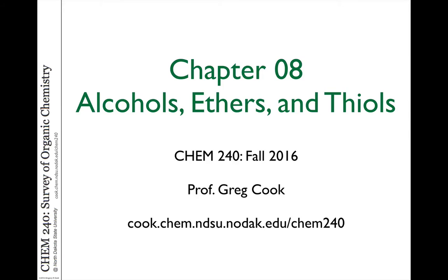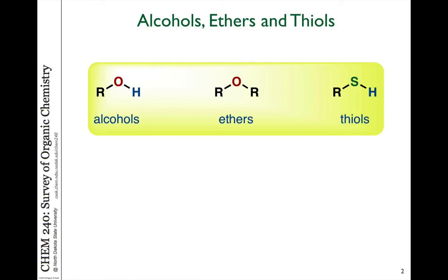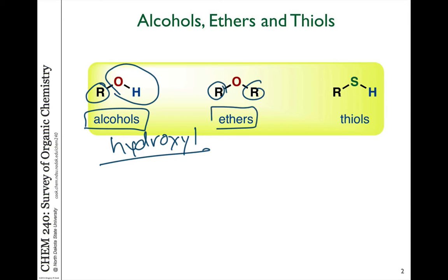In Chapter 8, we're going to introduce you to the functional groups of alcohols and their related compounds, ethers and the thiols, the sulfur-based compounds. Here you can see the general structures for these types of functional groups. Alcohols have a carbon group attached to an OH or hydroxyl group. An alcohol is any molecule that has a characteristic OH group. If both of the bonds to oxygen are attached to carbons, we refer to that as an ether. These compounds tend to be much more inert to reactivity than the alcohols.